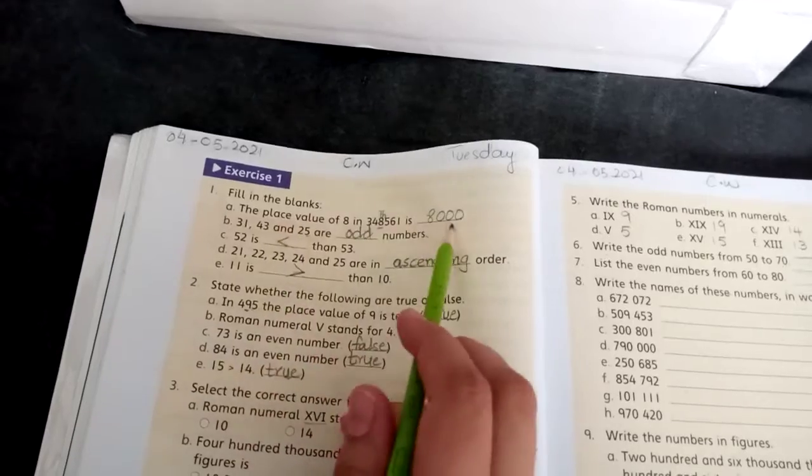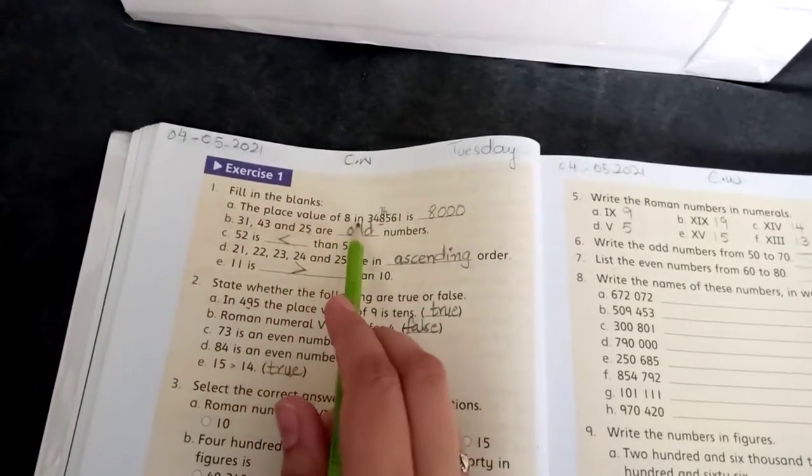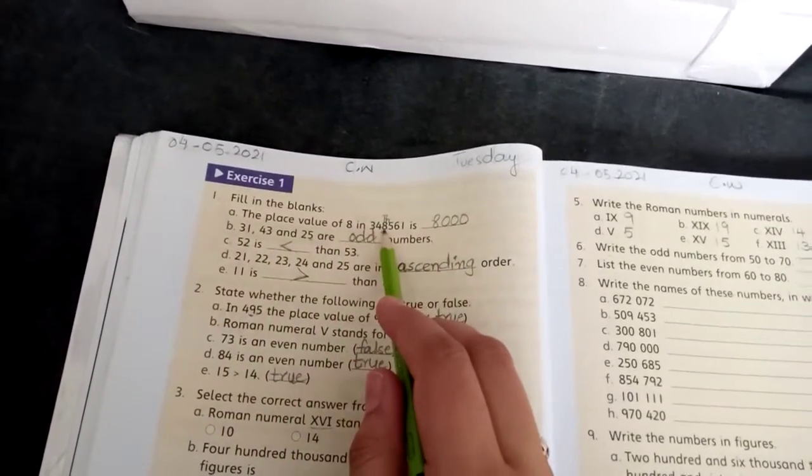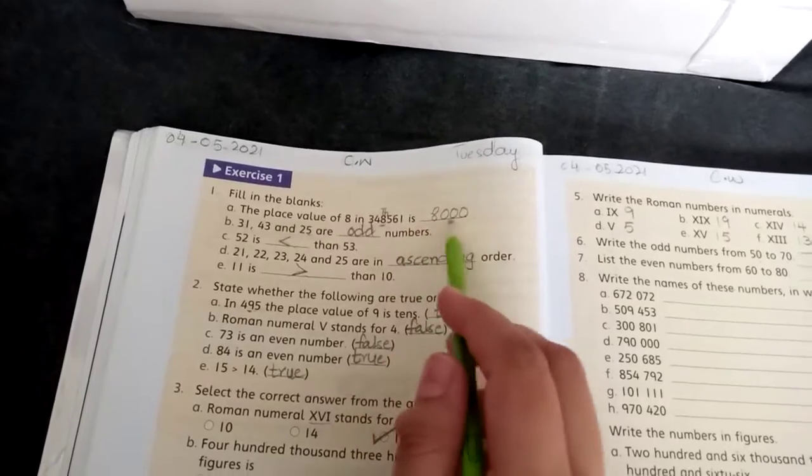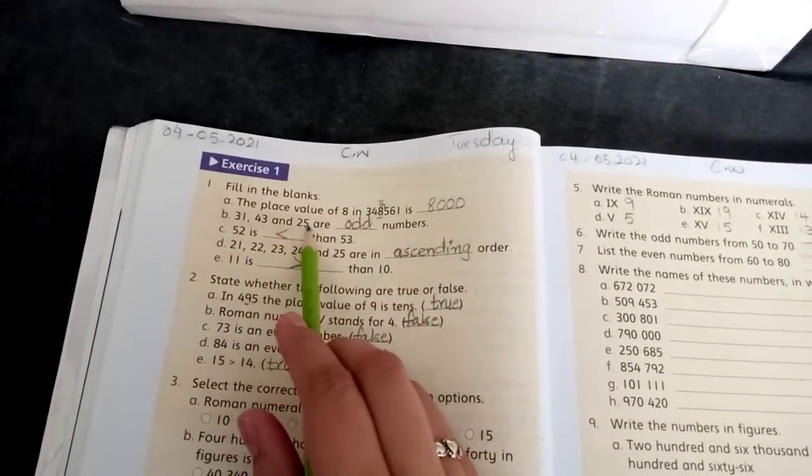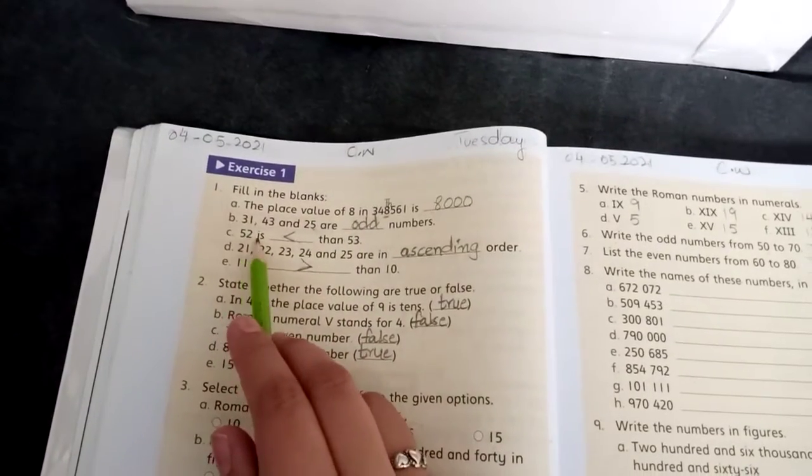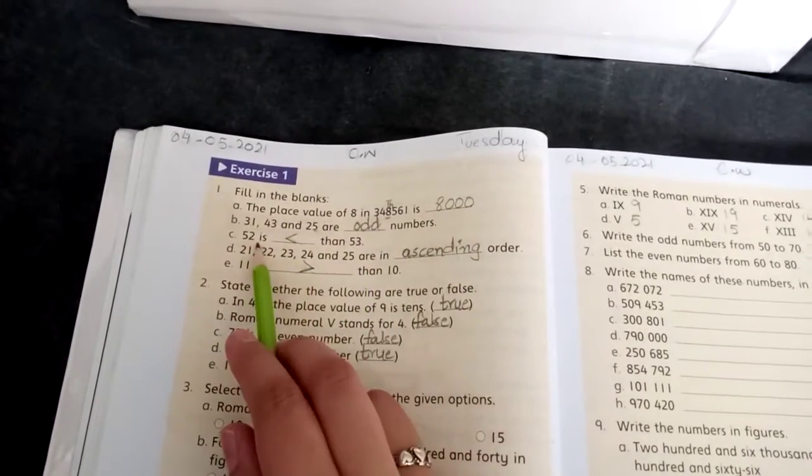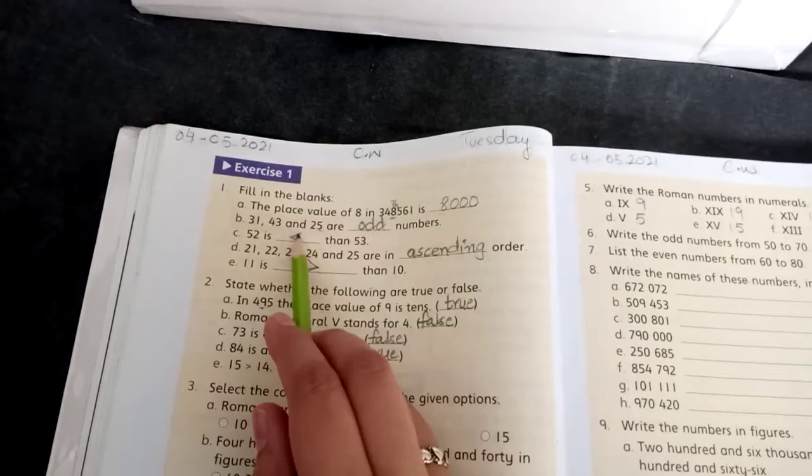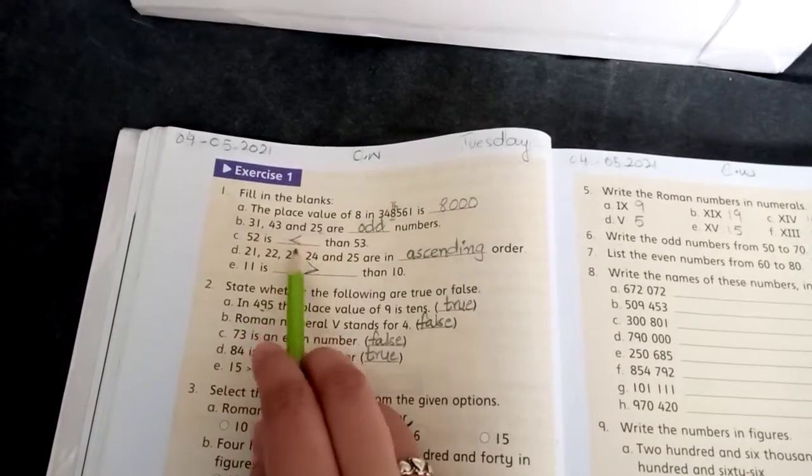Okay, question number one is fill in the blanks. You will read these fill in the blanks and then you will answer this. The place value of 8, 8 ki value 1000, to 8000 likhna. 31, 43, and 25 are dash numbers. These three ho kaunse numbers hain, odd numbers hain. 52 is dash than 53. 52 chota hai 53 se, this ka less than wala sign idhar hoga.